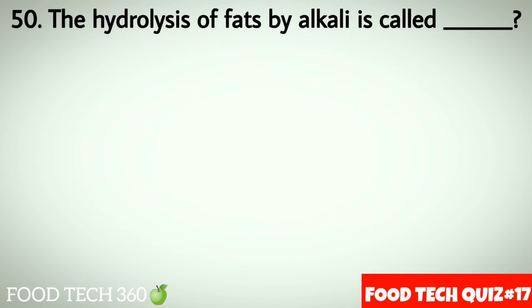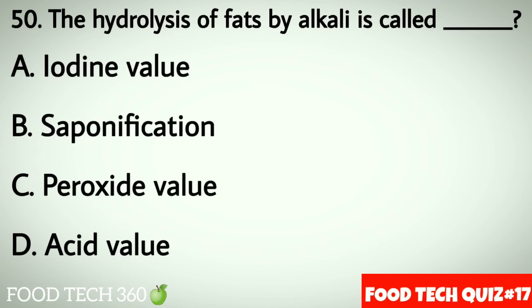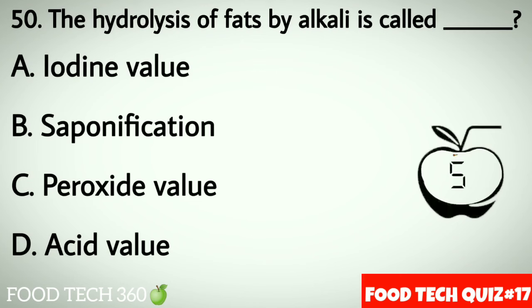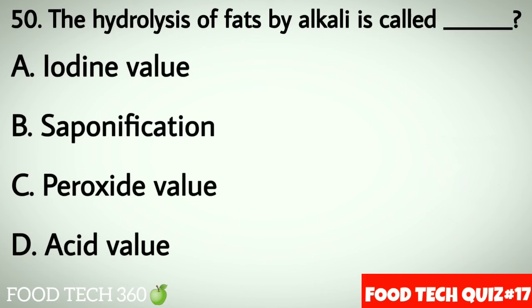Question number 50: The hydrolysis of fats by alkali is called dash. Options: A. Iodine value, B. Saponification, C. Peroxide value, D. Acid value. Correct answer: B. Saponification.